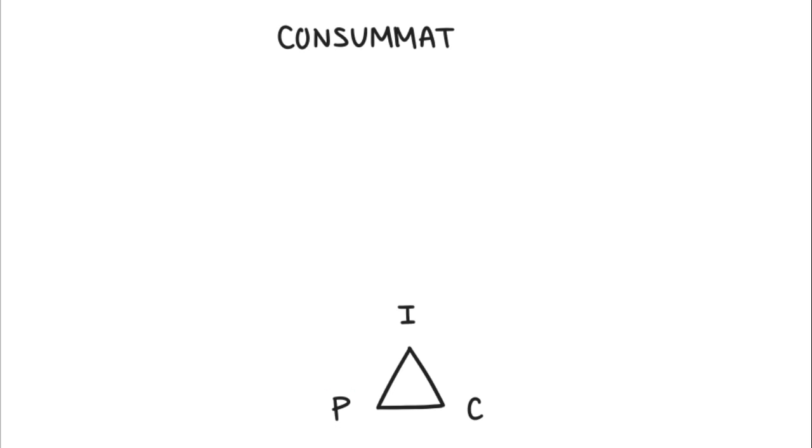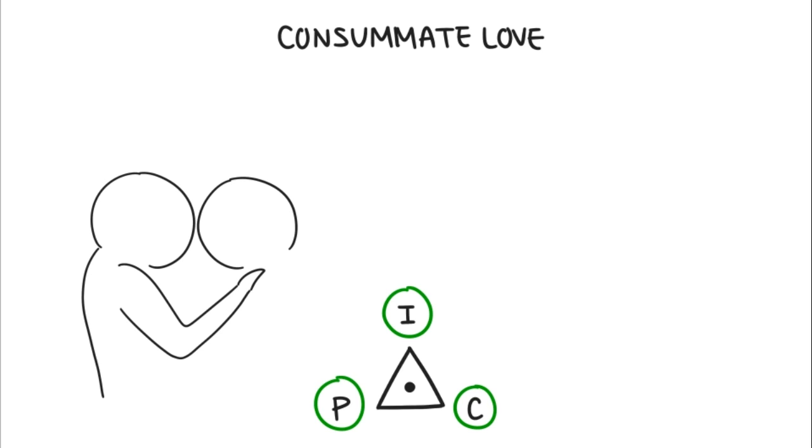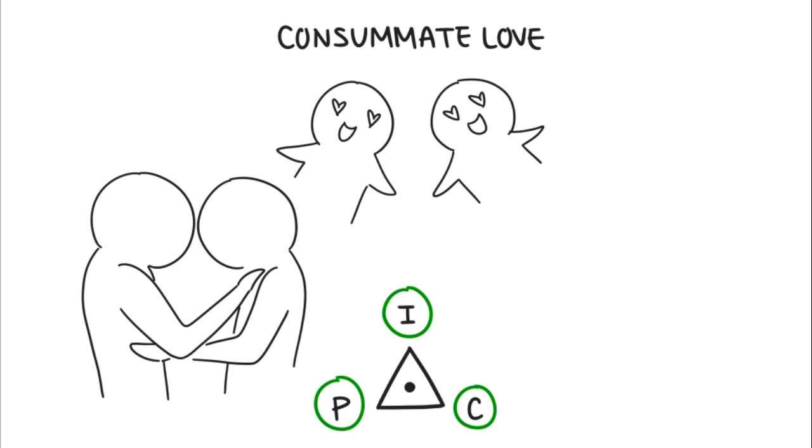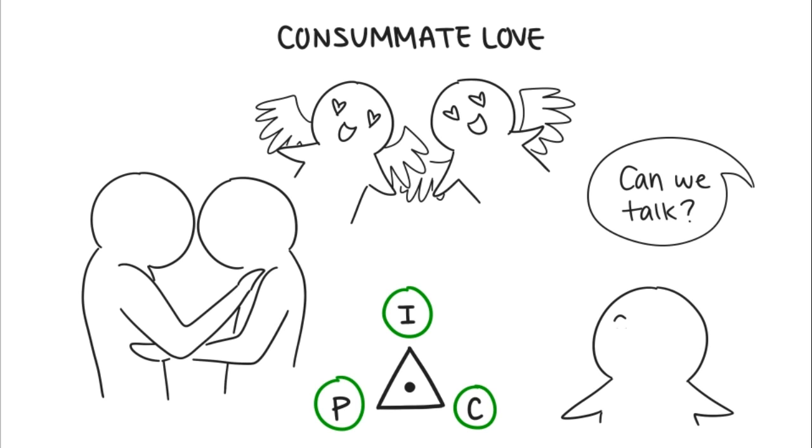Eight: consummate love. Consummate love sits at the very center of the triangle, as it's said to be the perfect, ideal type of love. All three components are present in this type of love, and it's the goal for people in relationships. According to Sternberg, couples experiencing consummate love will continue to be sexually intimate years into the relationship, and they can't imagine themselves being happier with other partners. They work through their difficulties and find delight in their relationships. However, Sternberg cautions that maintaining this relationship is harder than achieving it, and is not a permanent form of love.